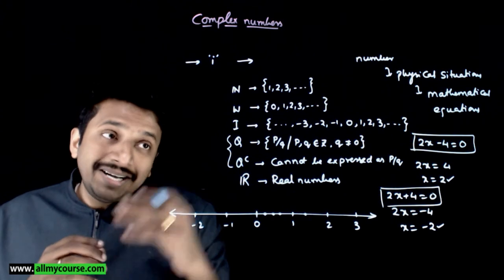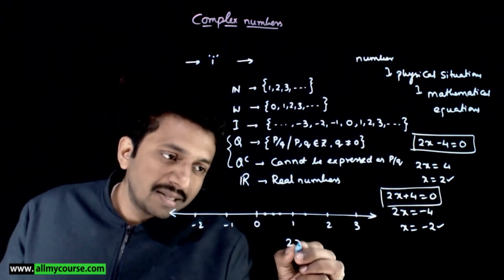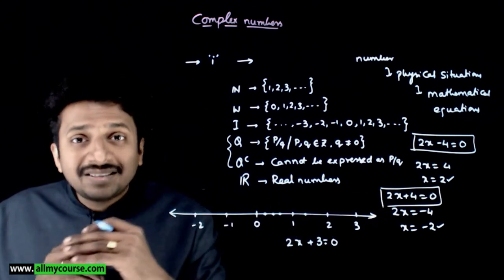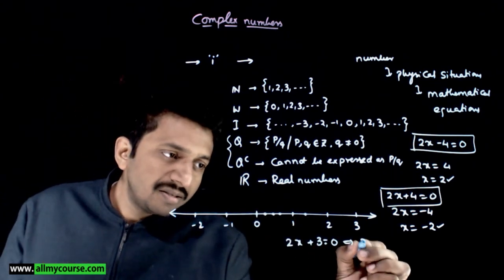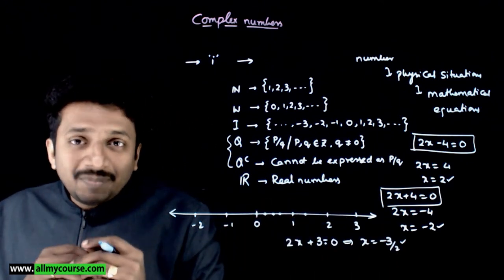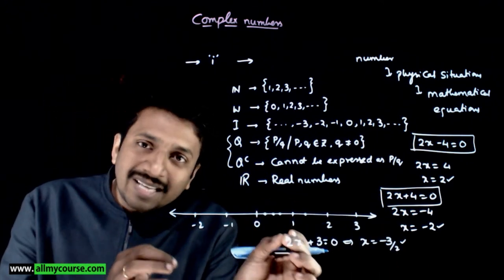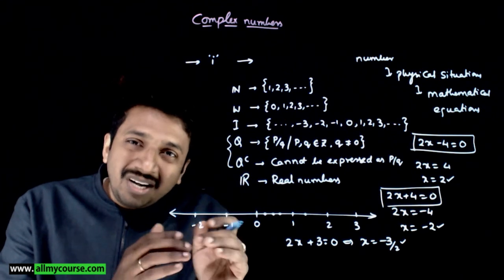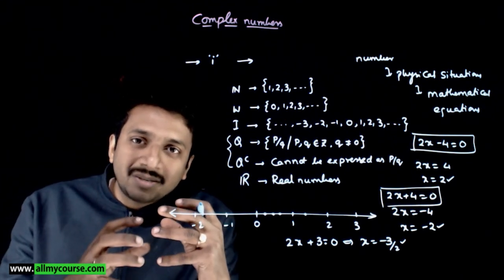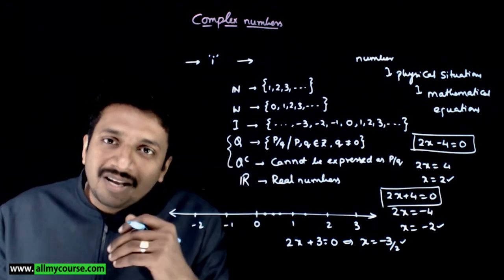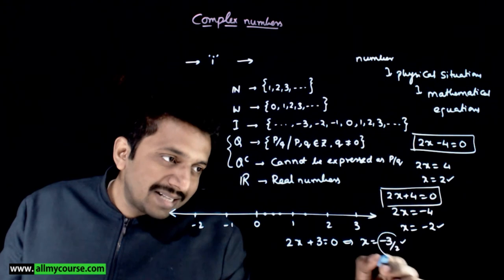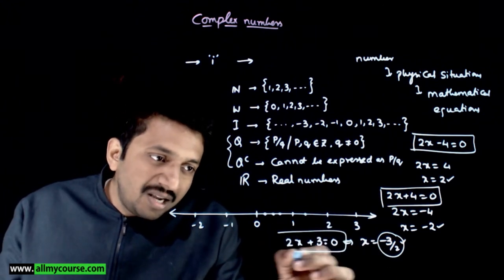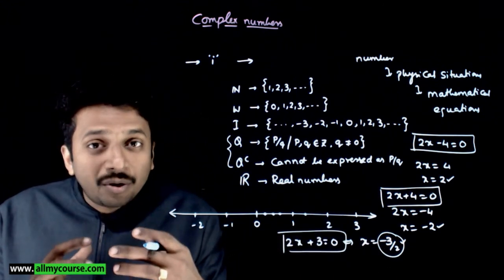There might be equations where integers are not enough. For example, 2x + 3 = 0 gives x = -3/2. There is no integer which satisfies this equation, so we need to expand our reach to rational numbers. Thus 2x + 3 = 0 has a solution in the set of rational numbers.